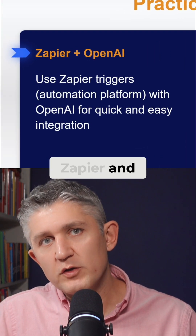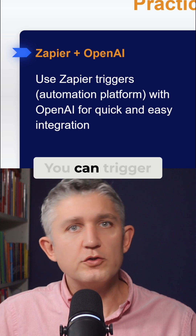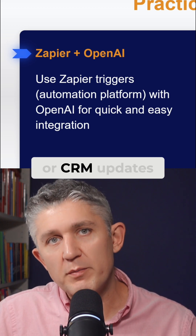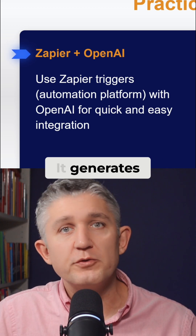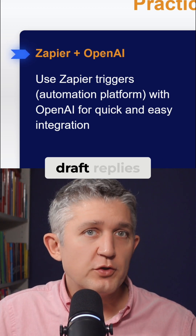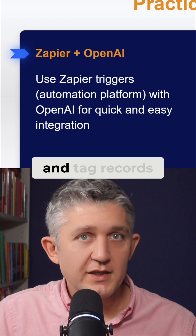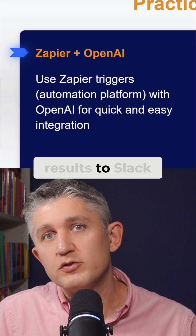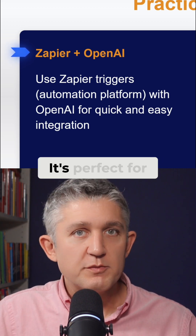Number one: Zapier and OpenAI. You can trigger on form submission, support tickets, or CRM updates. It generates summaries, draft replies, and tag records. Then it routes results to Slack, email, or your CRM.